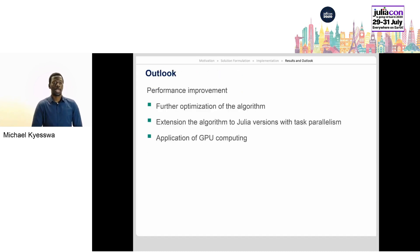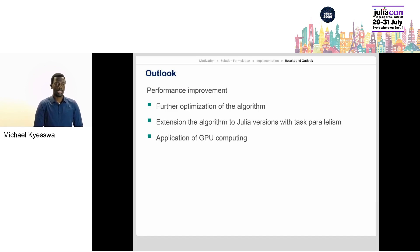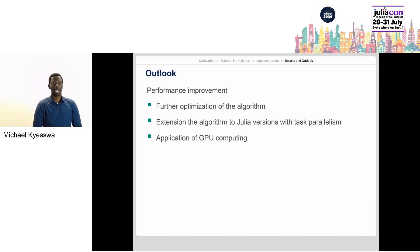Part of the ongoing work is to further improve the performance of the algorithm. This will include further optimization of the implementation and extension of the algorithm to a Julia version with task parallelism. Since the main steps in the time domain simulation are memory-bound problems, a further task will be to apply GPU computing in order to take advantage of the large memory bandwidth of graphics cards over CPUs.